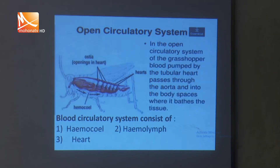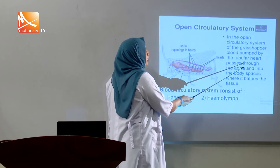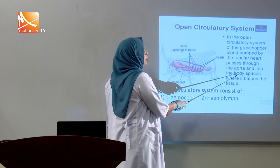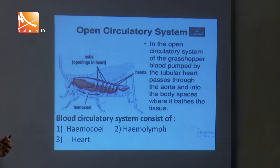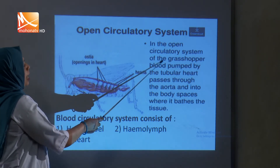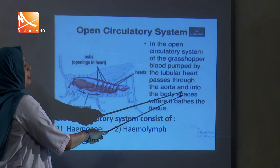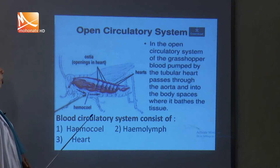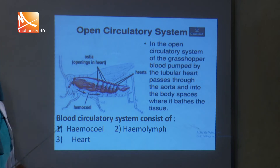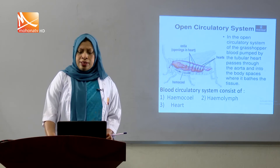In the open blood circulatory system of the grasshopper, blood pumped by the tubular heart passes through the aorta and into body spaces where it bathes the tissues. The circulatory system of grasshopper consists of blood, heart, and body spaces. The blood is known as hemolymph, and the body spaces are known as hemocoel. So the blood circulatory system of grasshopper consists of hemocoel, hemolymph, and heart.